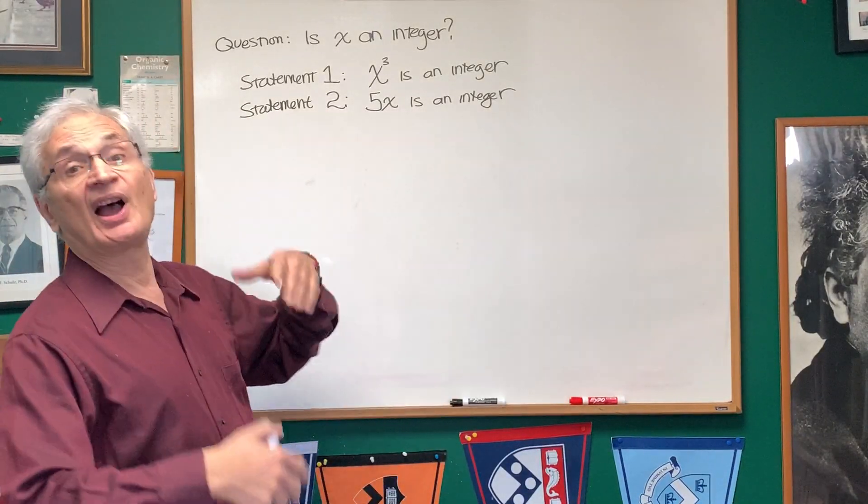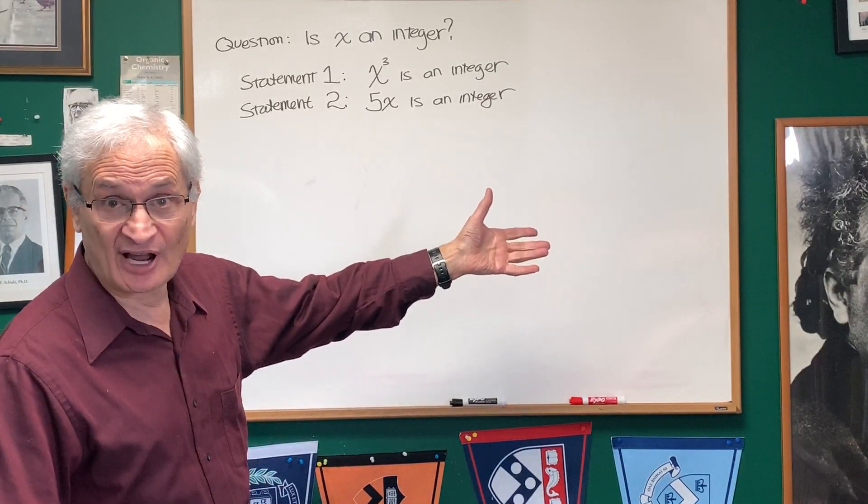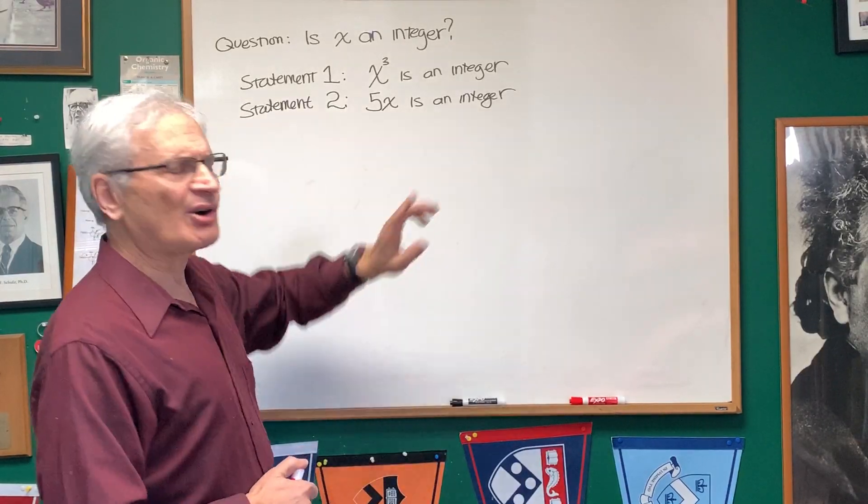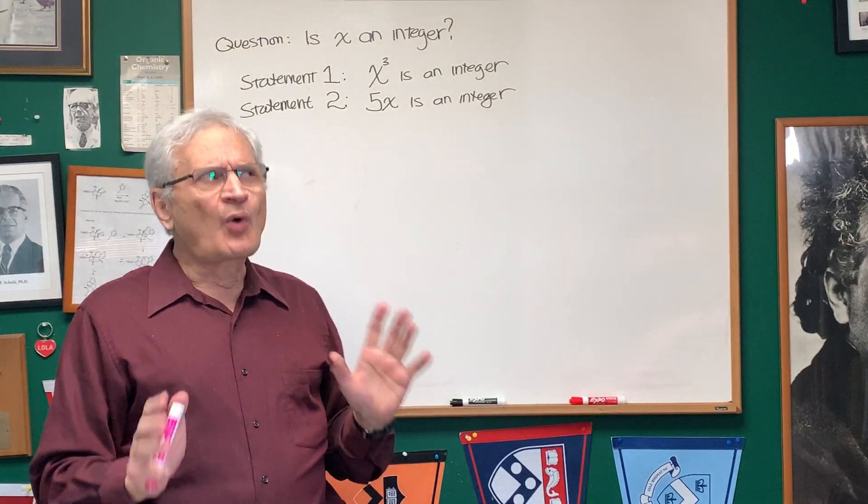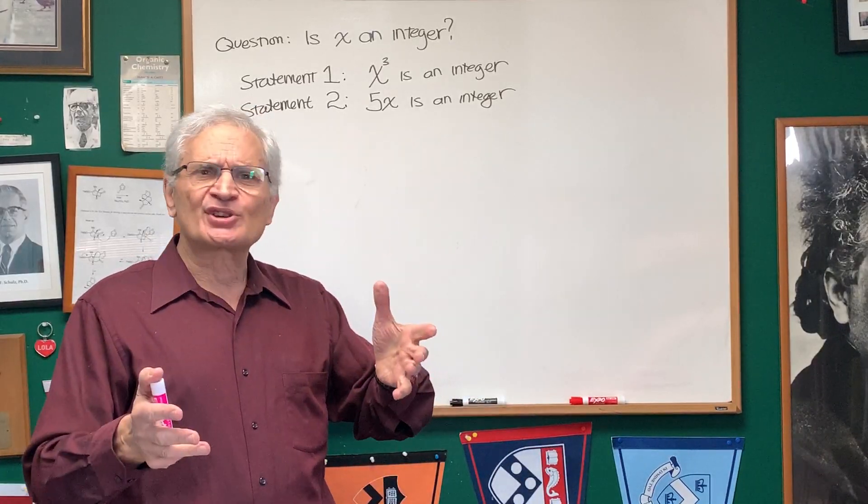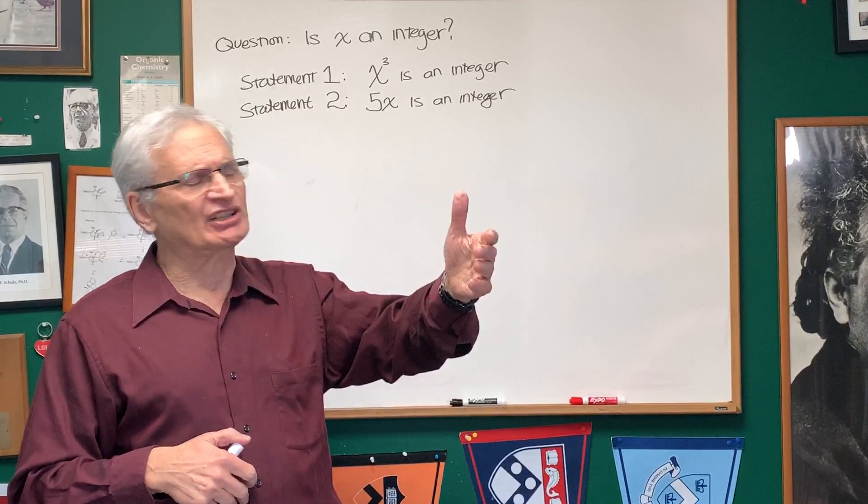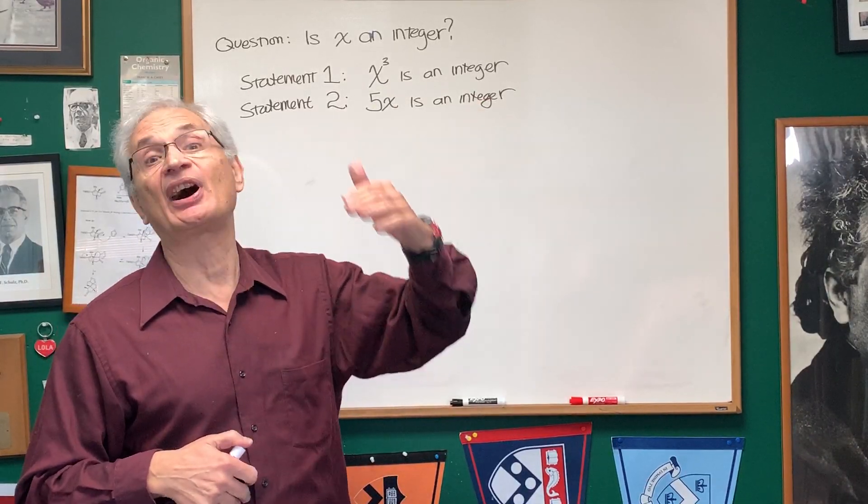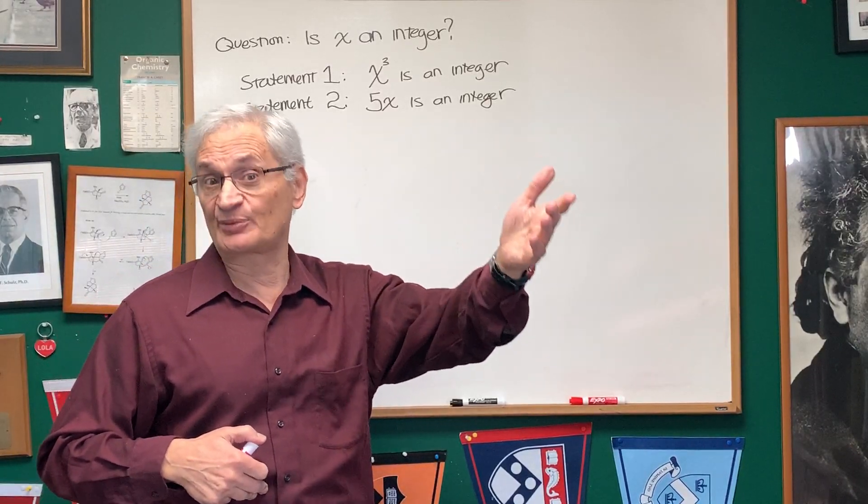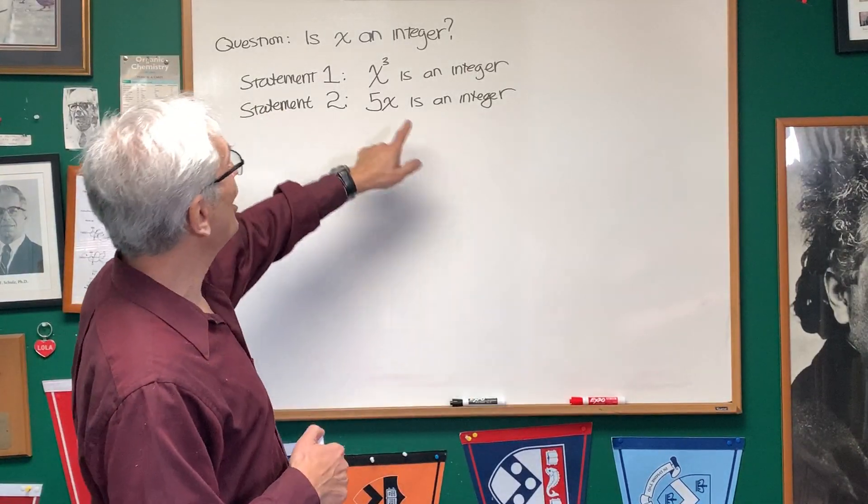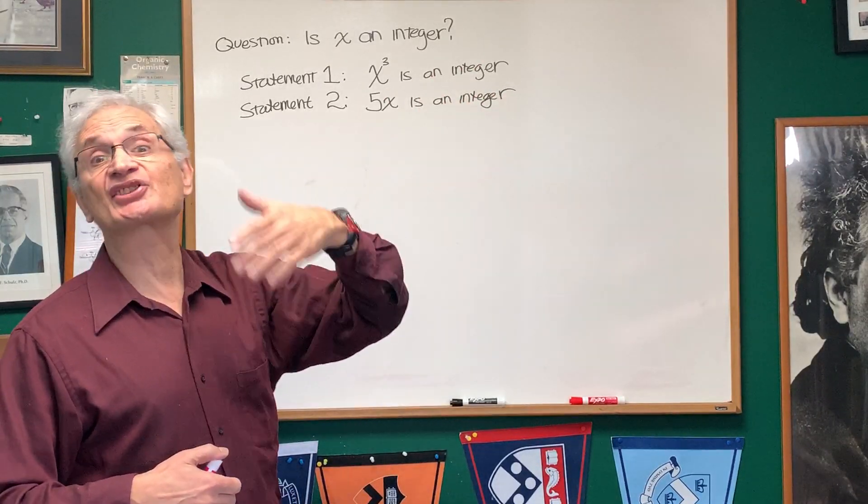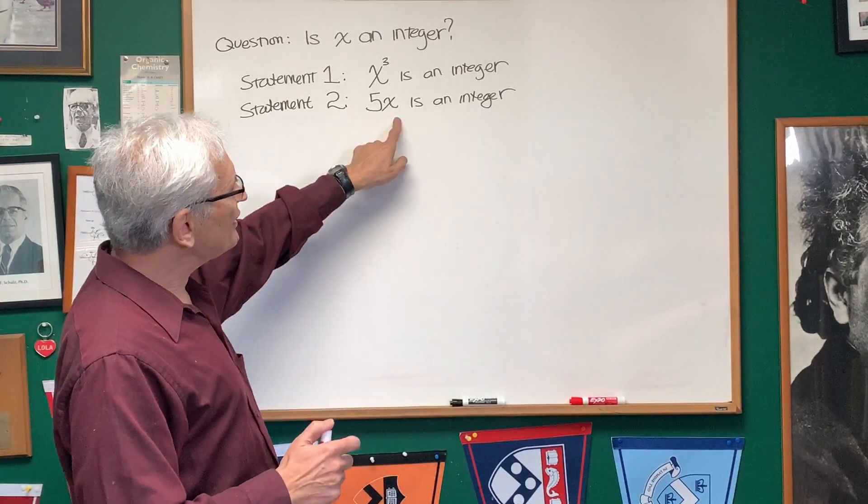Let's go to statement two and see if we can glean more information. 5x is an integer. What set of numbers does that include? x could be an integer itself, but it also includes all rational numbers with 5 in the denominator, like 18/5, 19/5, 20/5, which is an integer. So 5x is an integer describes rational numbers with 5 in the denominator as well as integers.